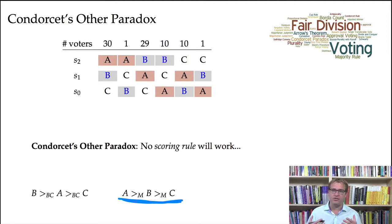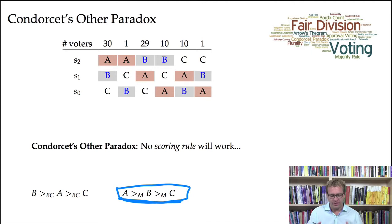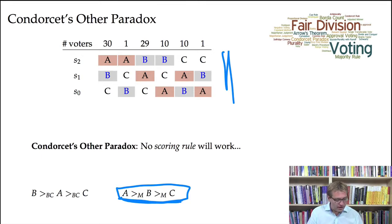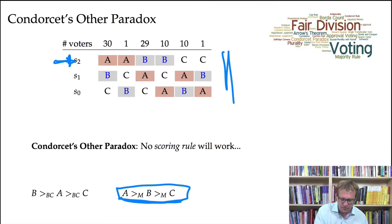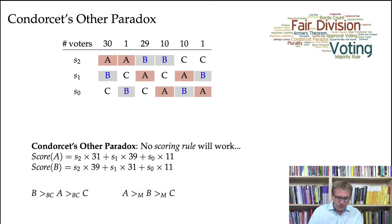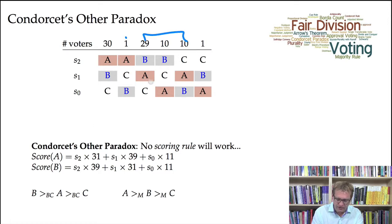This is a paradox insofar as you think that the Condorcet ordering A above B above C is the correct ranking given this data. Suppose we assign some number S2 of points to the first-ranked candidate, some number S1 of points to the second-ranked candidate, and some number S0 of points to the last-ranked candidate. The score for candidate A is going to be S2 times 31 voters, plus S1 times 39 voters, plus S0 times 11 voters.